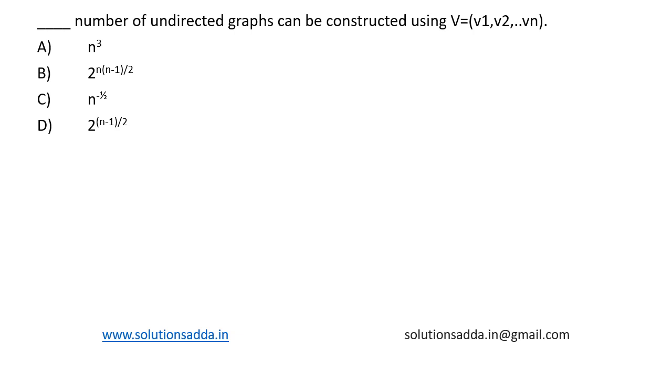This is a question from data structures. The number of undirected graphs that can be constructed using the vertices v1, v2, etc., vn. We have n vertices, and we are asked to find out the number of undirected graphs that are possible.